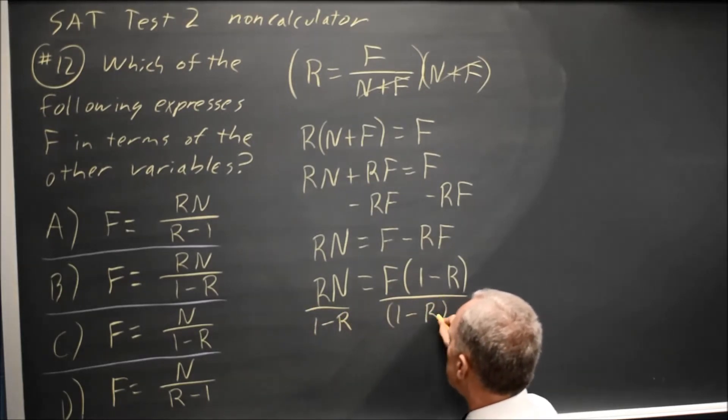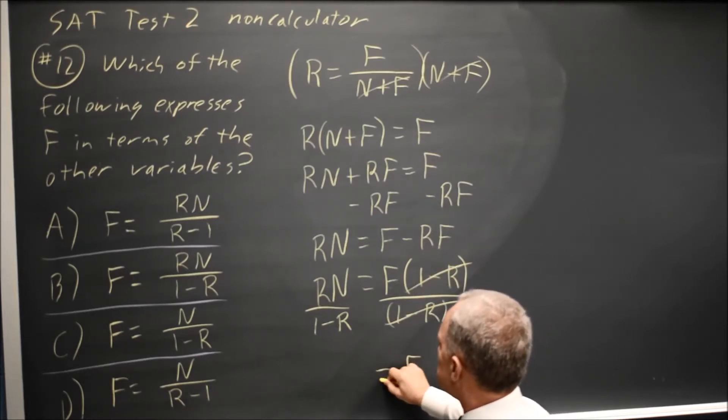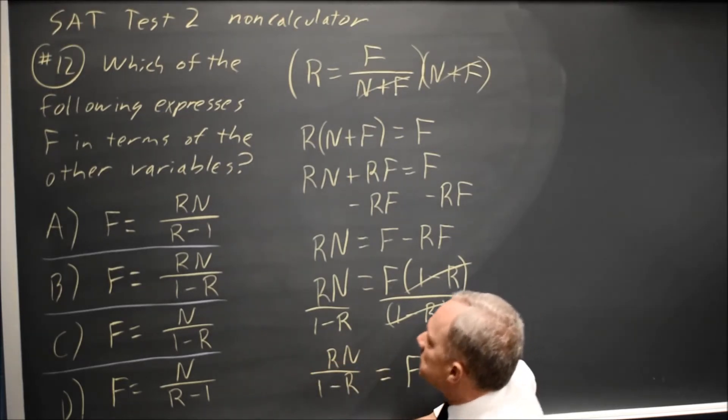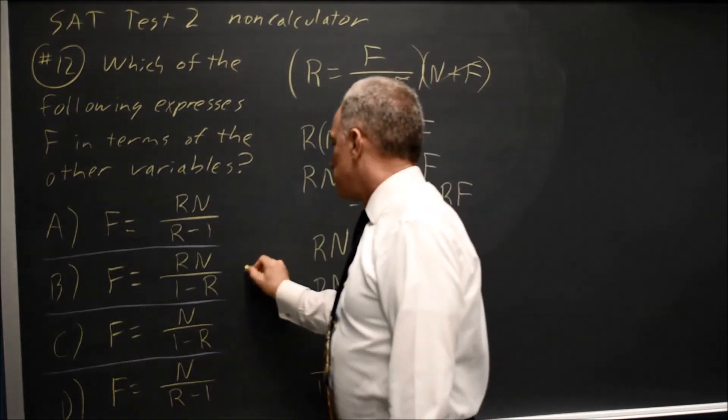1 minus r over 1 minus r is 1. Those cancel, so I'm left with just f on the right equals rn over 1 minus r, and I see that that matches choice b.